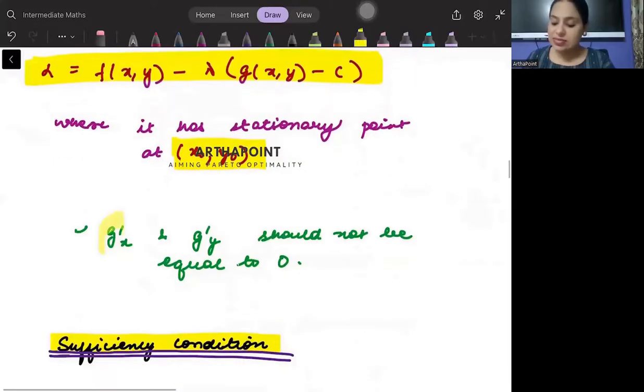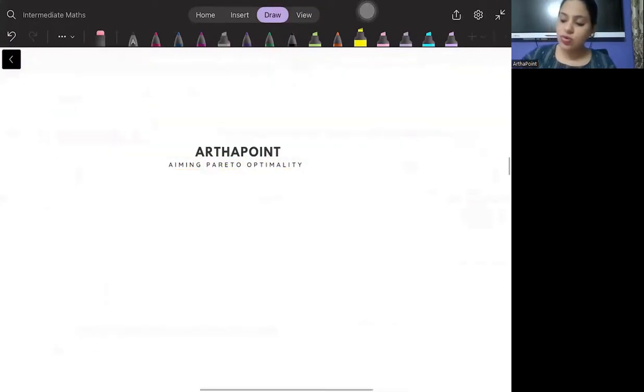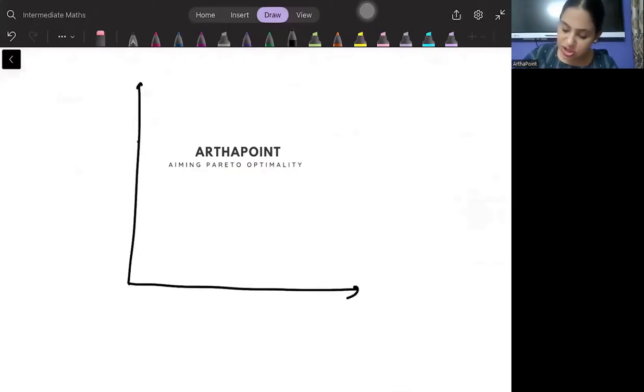At the same time, g'x and g'y should not be equal to 0. I can explain you in a much better way through an example. Let's talk about economics.